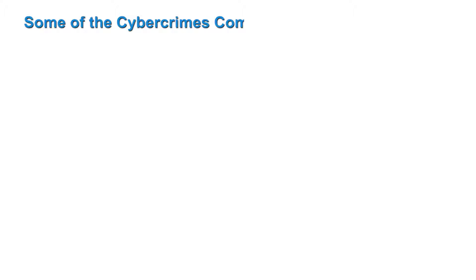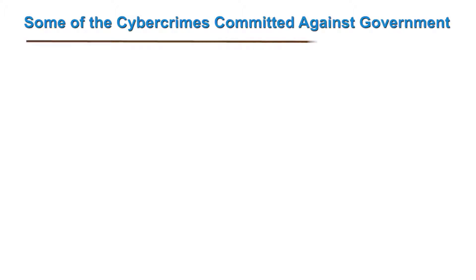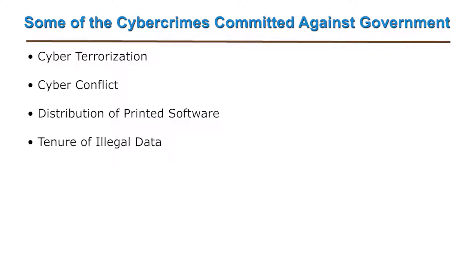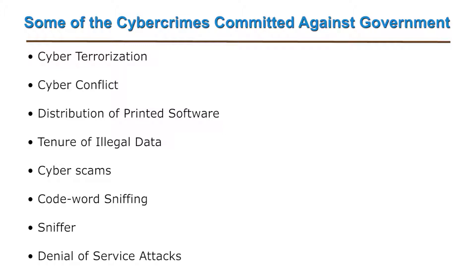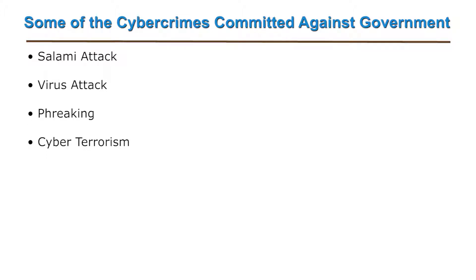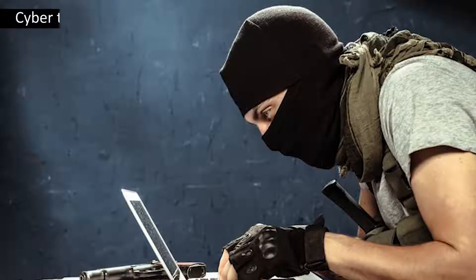Some of the cyber crimes committed against government can be listed as follows: cyber terrorization, cyber conflict, distribution of pirated software, tenure of illegal data, cyber scams, code word sniffing, denial of service attacks, salami attack, virus attack, freaking, cyber terrorism, war dialer, and finally cyber warfare.